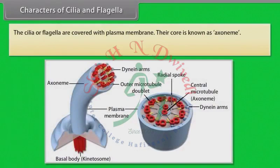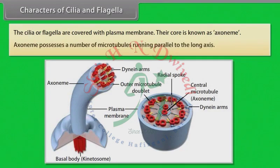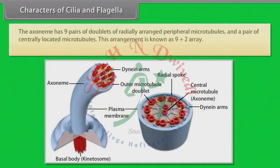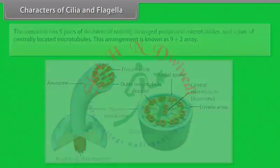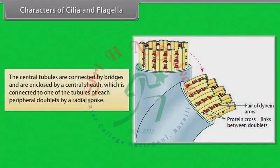Cilia and flagella are covered with plasma membrane. Their core is known as the axoneme. The axoneme possesses a number of microtubules running parallel to the long axis. The axoneme has nine pairs of doublets of radially arranged peripheral microtubules and a pair of centrally located microtubules. This arrangement is known as the 9+2 array. The central tubules are connected by bridges and are enclosed by a central sheath.